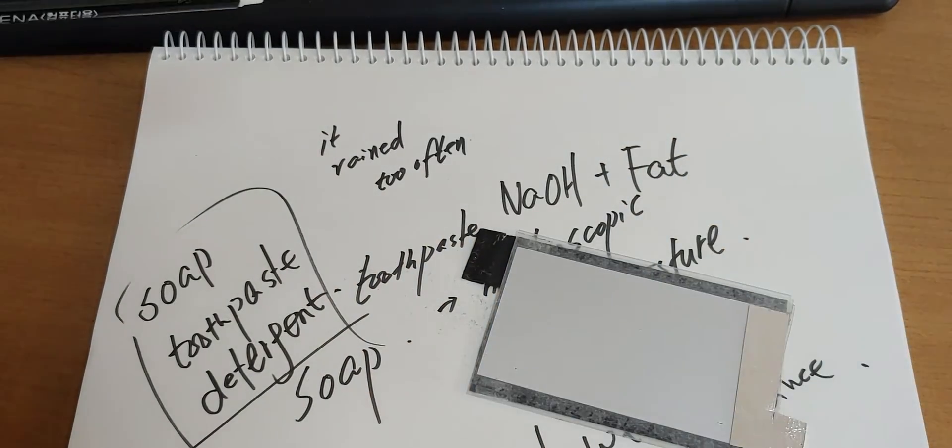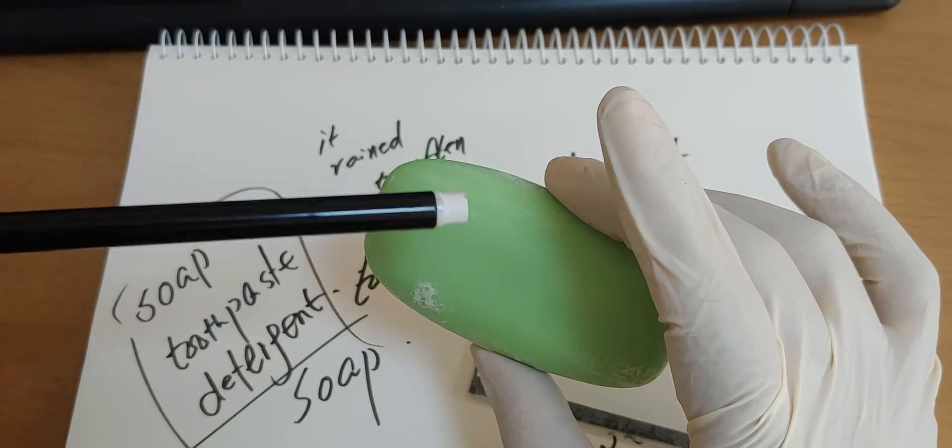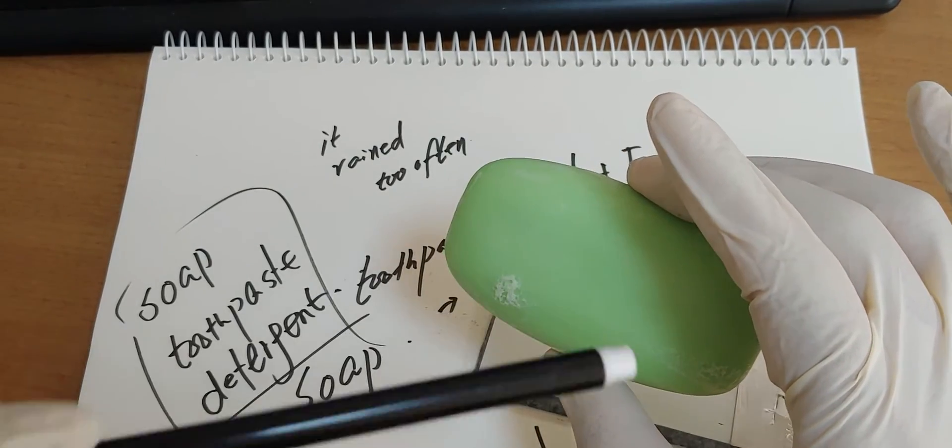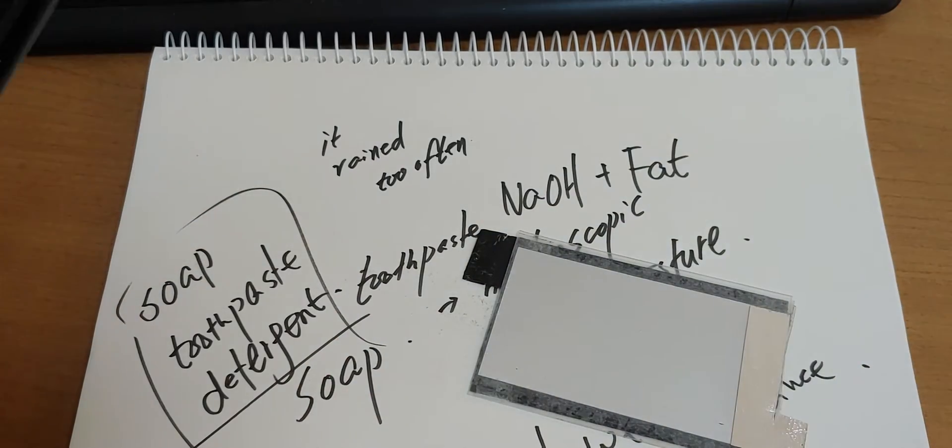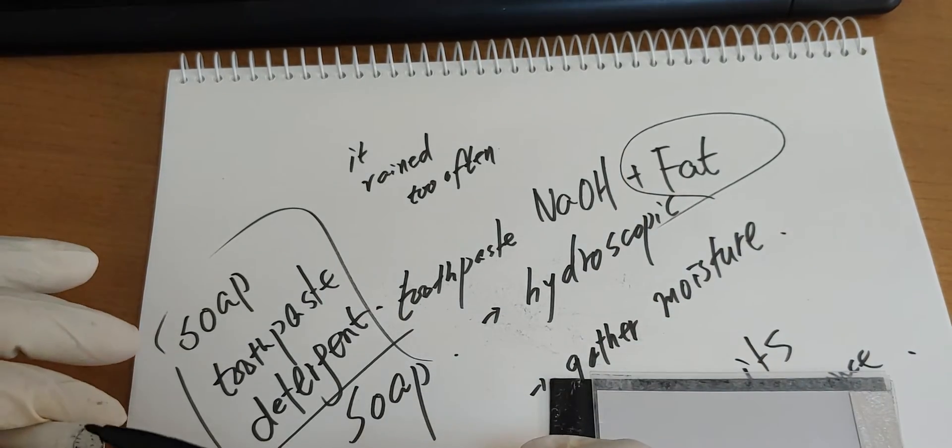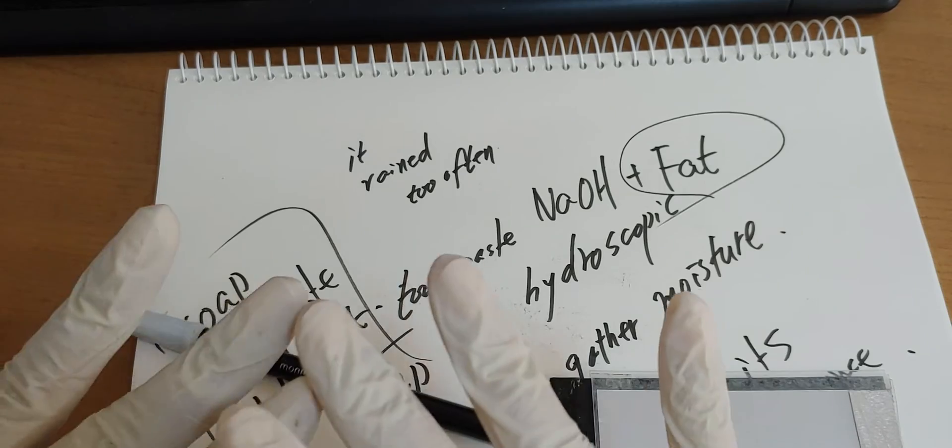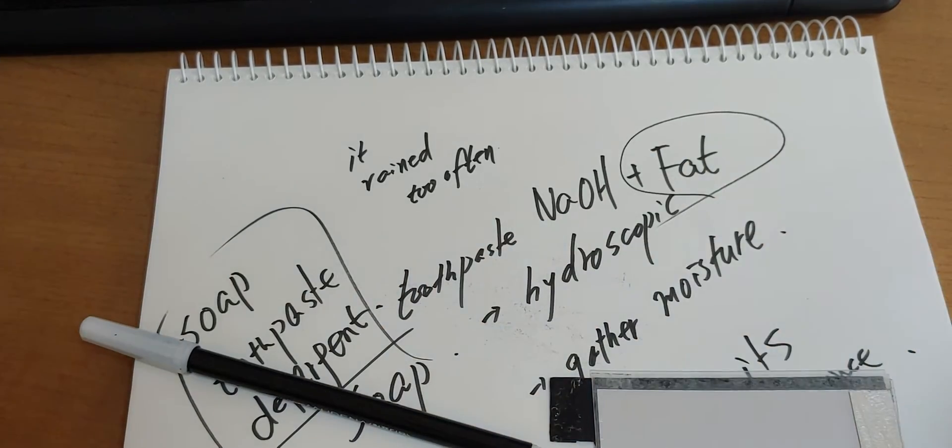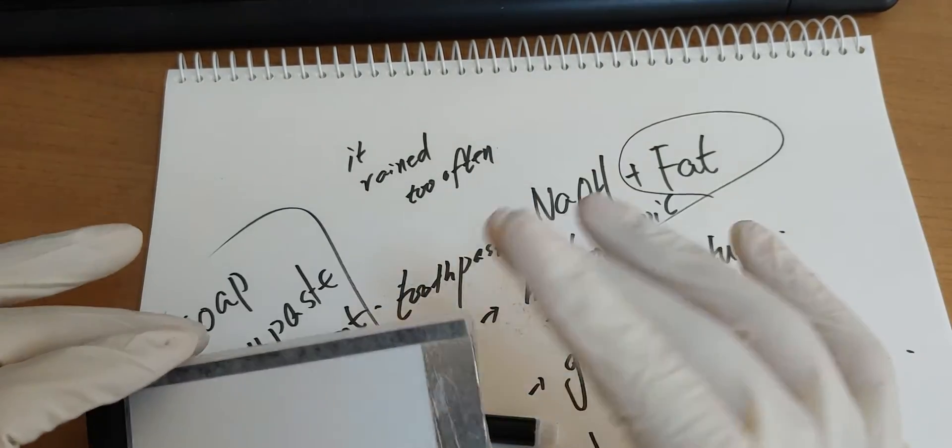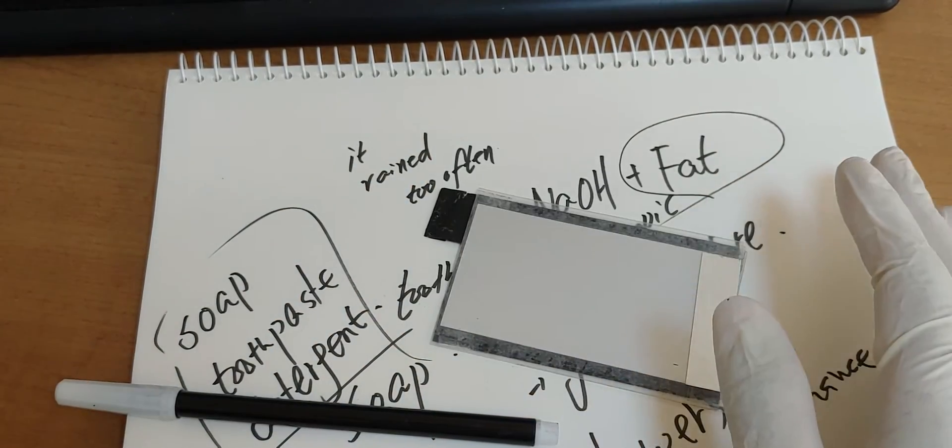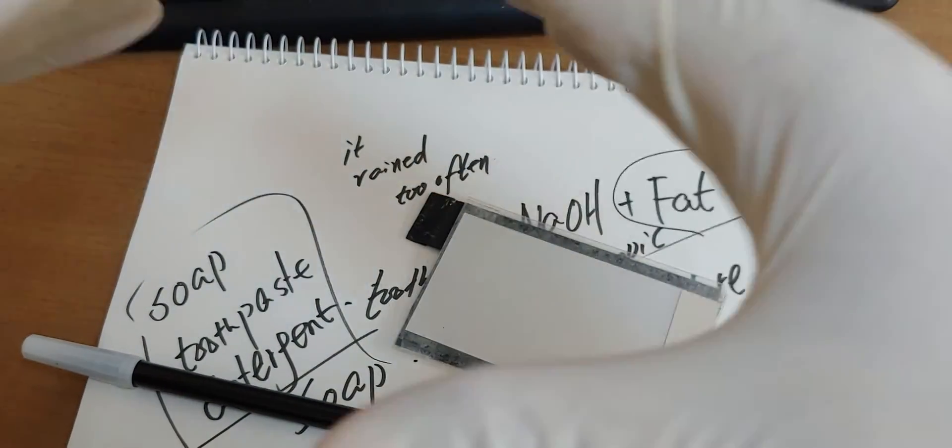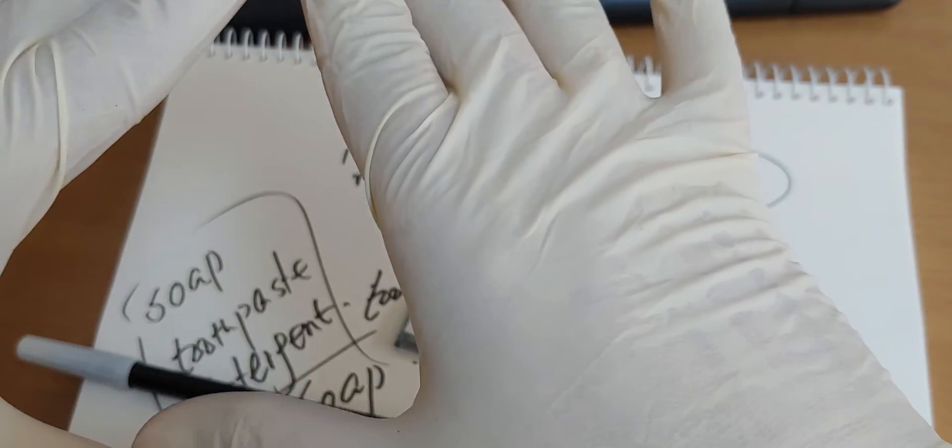By the way, from this experiment we found something very interesting. Soap stabilizes the voltage. Of course, fat can be a problem because it can be a resistance. But to make a solid state cathode, we need something like a fat, or like the other things. Not bad.